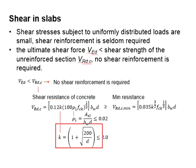The k is given here and it should be less than 2.0. And the ρ1 is the percentage of reinforcement bar given here, and it is less than 0.02.